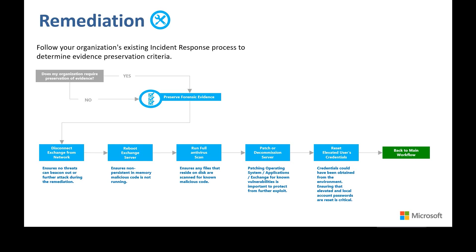After restarting the server, it is important to run a full antivirus scan. This includes ensuring that antivirus exclusions typically put in place for Exchange servers for performance reasons are not adhered to. MSERT does not adhere to antivirus exclusions and is good for this step. Note that MSERT is updated constantly, so be sure to download a new copy upon each execution to make sure your organization is running definitions for the latest threats.